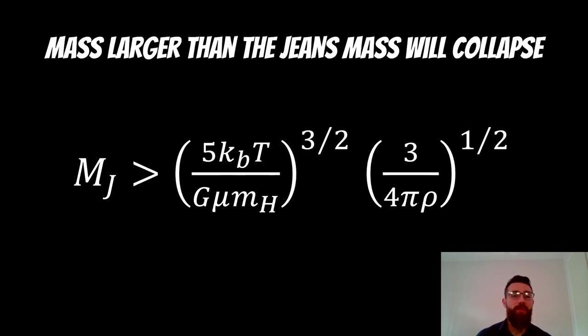And what does it actually mean? Well, it means if your cloud has a mass larger than the Jeans mass, it's going to collapse. So the gravitational forces will overcome that thermal expansion energy, and the cloud will collapse. So if you've got a mass greater, it's going to collapse.